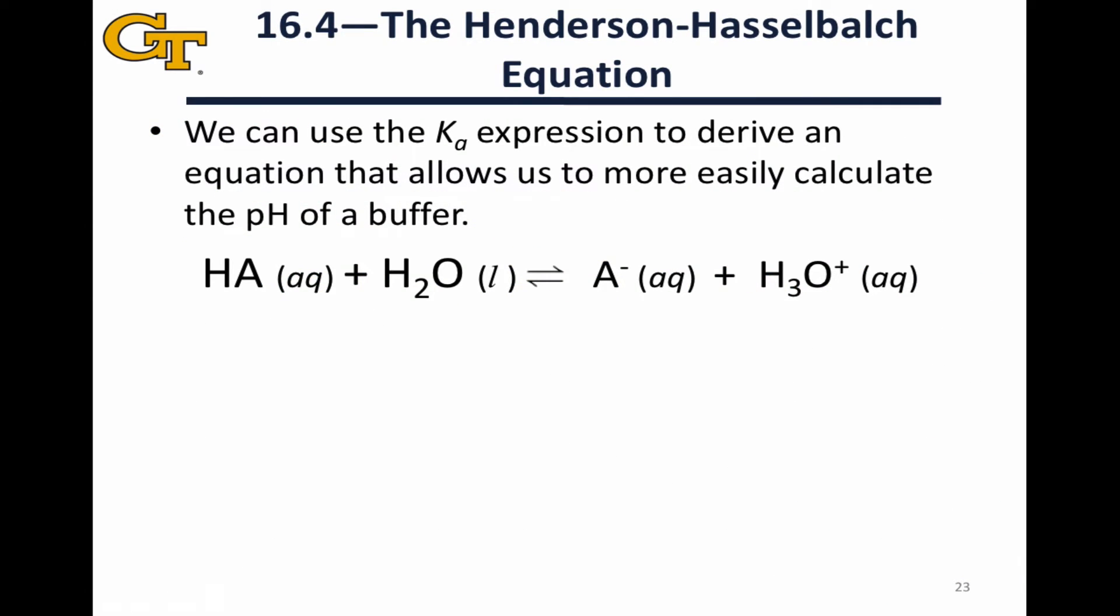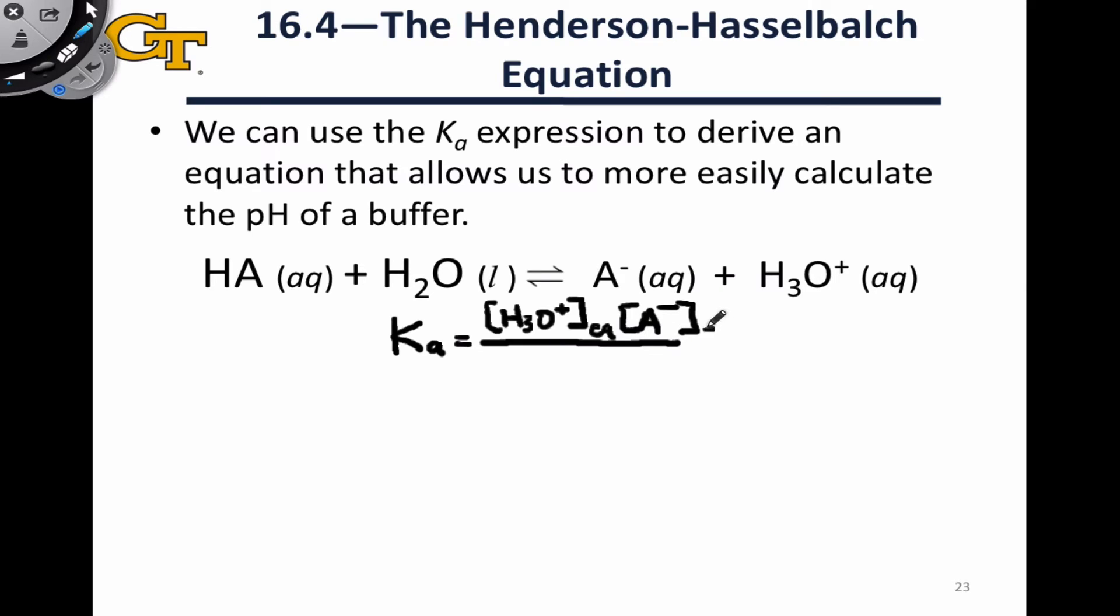There's a somewhat easier way to go about solving problems like this. Rather than building out an ice table, as we did in the last example, we can start with the Ka expression, and notice some interesting things about Ka expressions for any acid dissociation process, which is going to be the basis of essentially any buffer of a weak acid and its conjugate base. So just as we wrote out before, Ka is going to be equal to H3O+, at equilibrium, and I'm going to add the EQ subscripts here for reasons that will become apparent in a second.